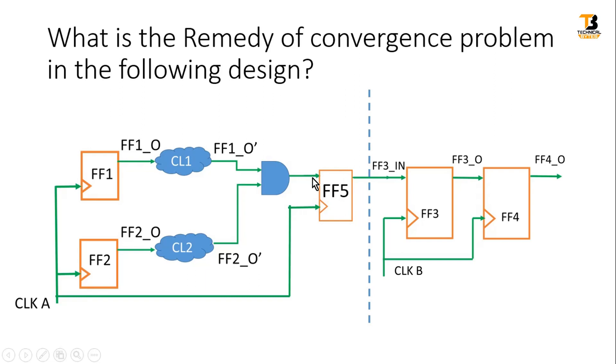But we need to make sure that flip flop 1 to flip flop 5 and flip flop 2 to flip flop 5 timing is met with respect to clock domain A. And because of this synchronous path between flip flop 1 to flip flop 5 and flip flop 2 to flip flop 5, all the glitches will be filtered. Only valid data will be transferred at the output of flip flop 5. And that is the basic concept of static timing analysis.